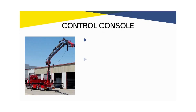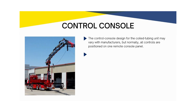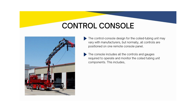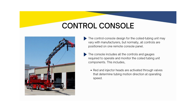The control console designed for the coiled tubing unit may vary with manufacturers, but normally all controls are positioned on one remote console panel. The console includes all the controls and gauges required to operate and monitor the coiled tubing unit components. This includes: A. Reel and injector heads activated through valves that determine tubing motion direction at operating speed; B. Control systems that regulate the drive chain, stripper rubber, and blowout preventers.